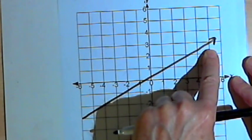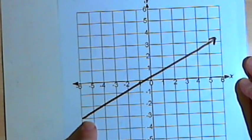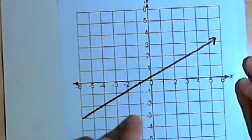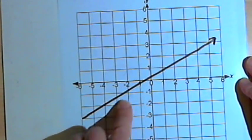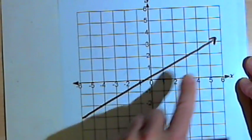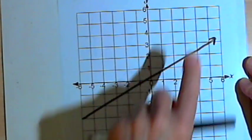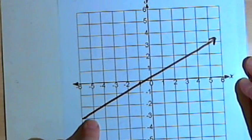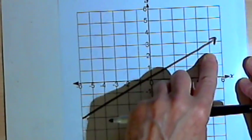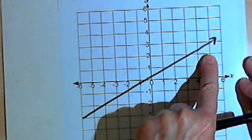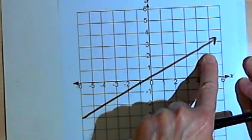Another way to say this would be as the x values get bigger, that happens when I move from left to right, the y values are also getting bigger. That happens when I move down from the bottom of the page to the top of the page. So if the graph is moving upward as we go from left to right, we say that's an increasing function.